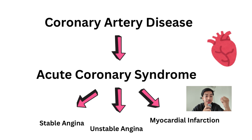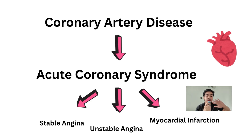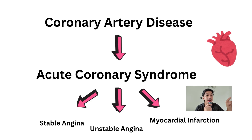Number one is stable angina, number two is unstable angina, and number three is myocardial infarction, which is our topic for today. Please remember this full picture so you can absolutely understand. All of these things are interconnected — MI is connected to ACS, and ACS is connected to coronary artery disease, which is connected to unstable angina and MI.